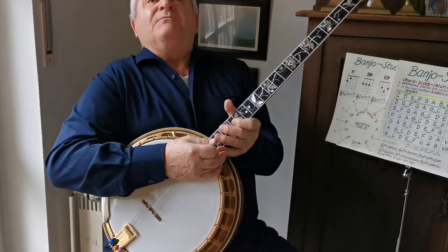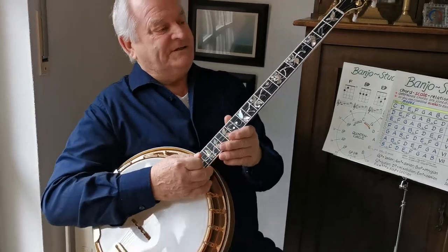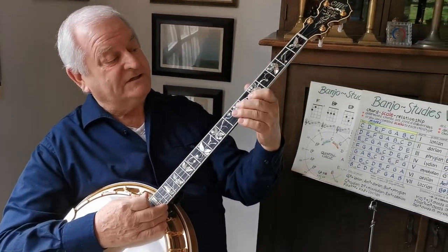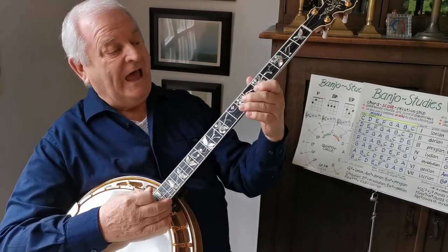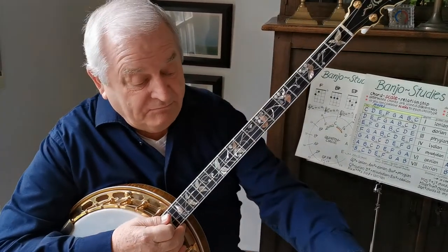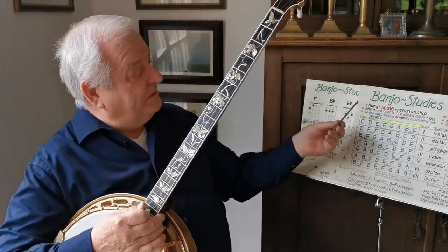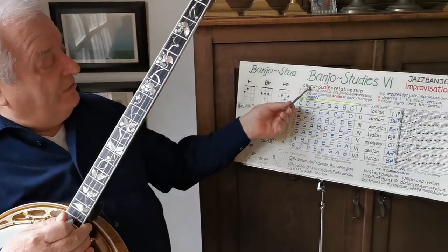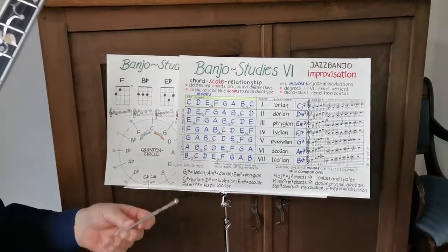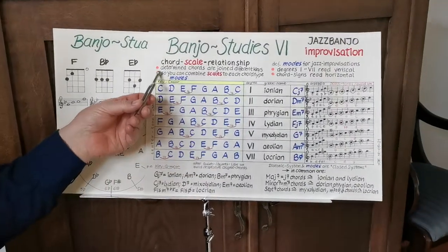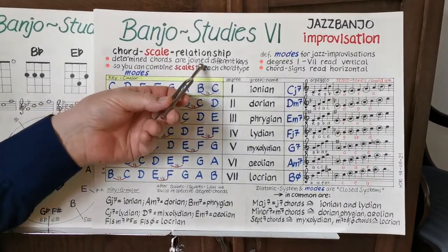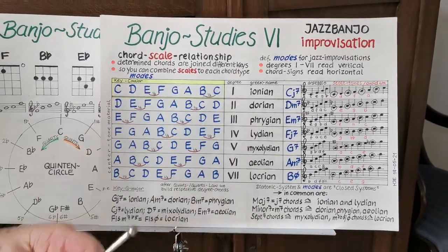You can improvise in chords plus single string, and you need then, for example, the chord-scale relationship. Diatonic chords are joined to different keys.